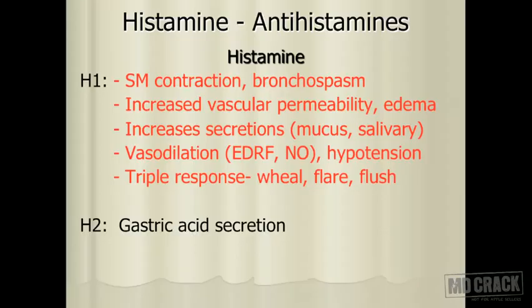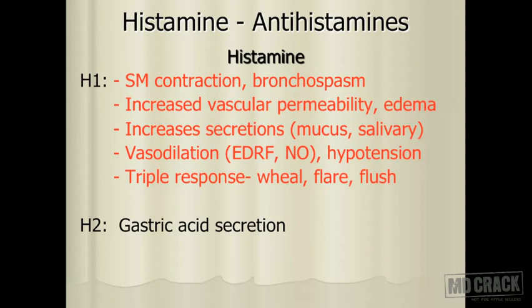Histamine acts mainly on the H1 and H2 receptors, and the effects on H2 receptors most of the time are the noxious effects. The H1 receptors are responsible for smooth muscle contraction and bronchospasm, increased vascular permeability and edema, increased secretions such as mucus and salivary secretions, vasodilation due to release of EDRF and nitric oxide leading to hypotension. There is also a triple response popularly known as weal, flare and flush — these are the effects of H1 stimulation.